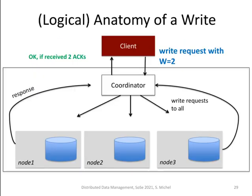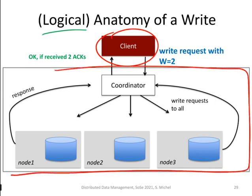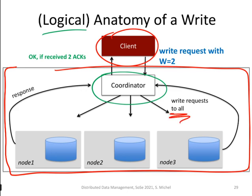Here's an illustration of the logical anatomy of a write. The client is writing to our system. This box is our system, which in this case contains one coordinator — this task can also be distributed, but for simplicity, there's some service we call a coordinator that we are writing to. This coordinator will send the write request to all of the servers, to all three nodes in this case, and will wait for responses that the write was successful.